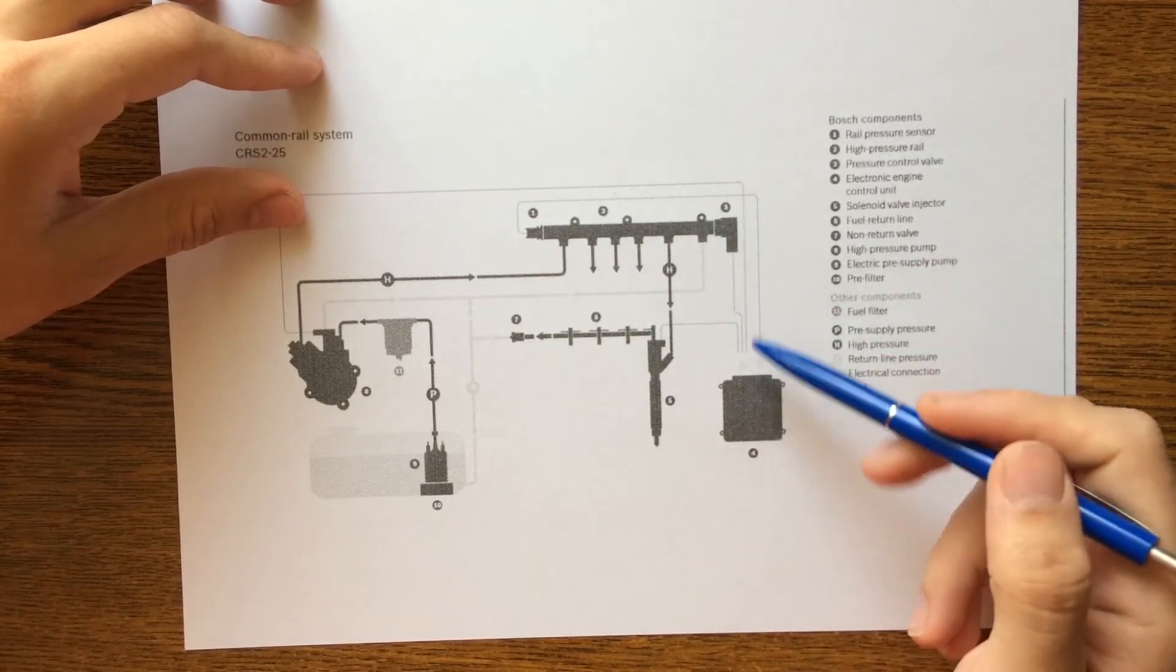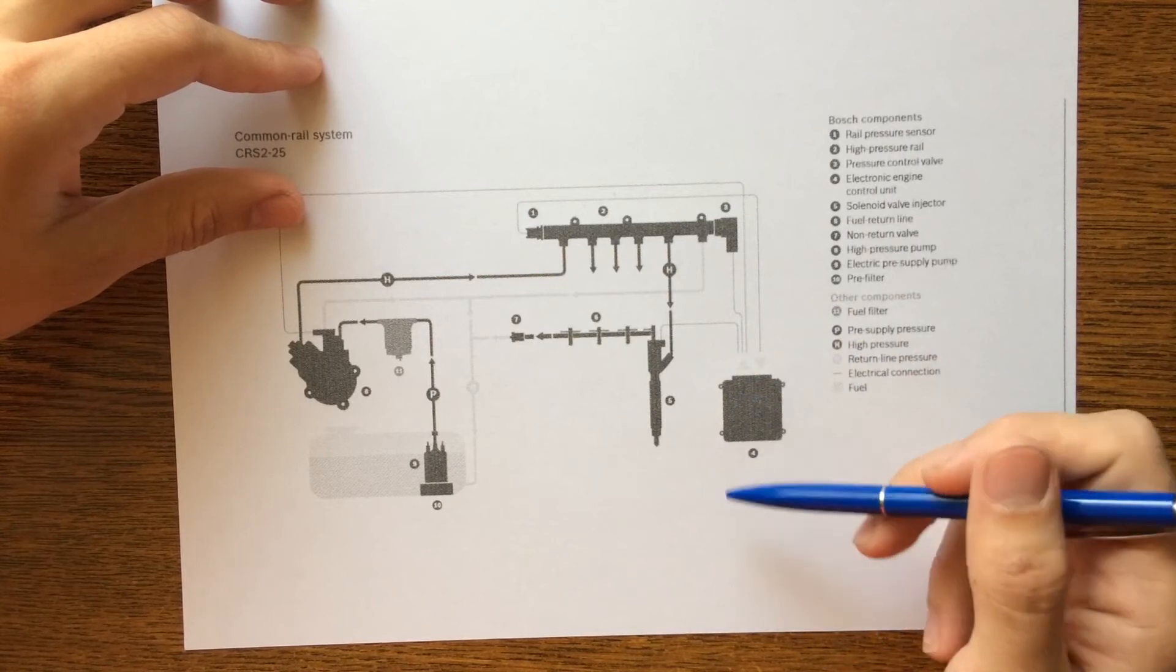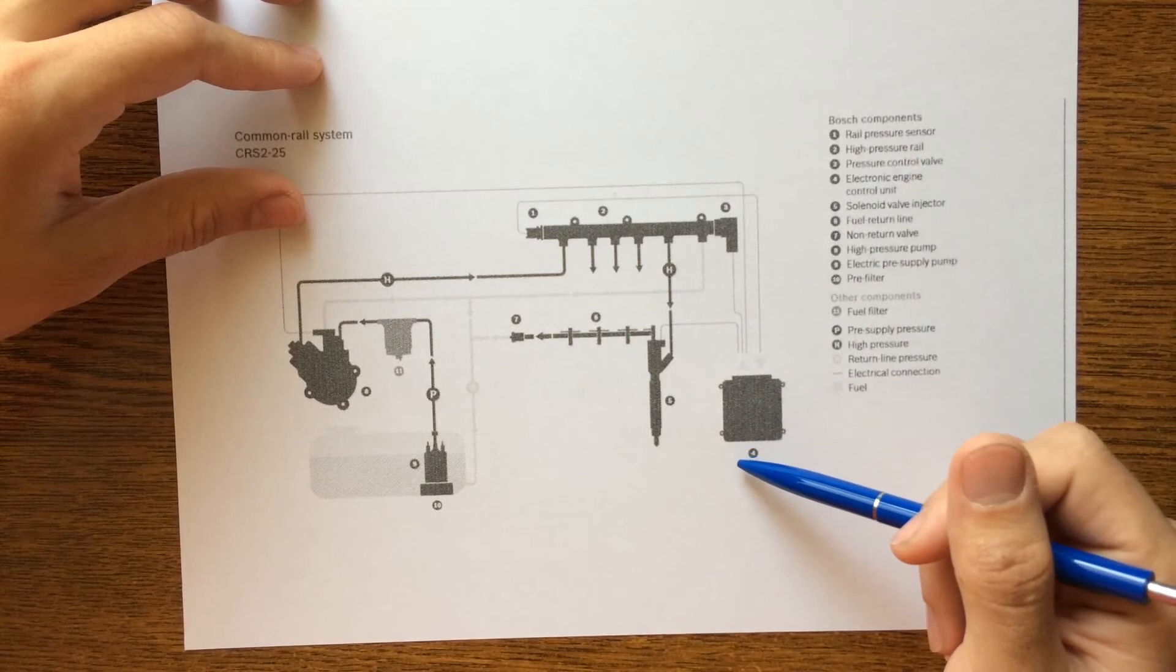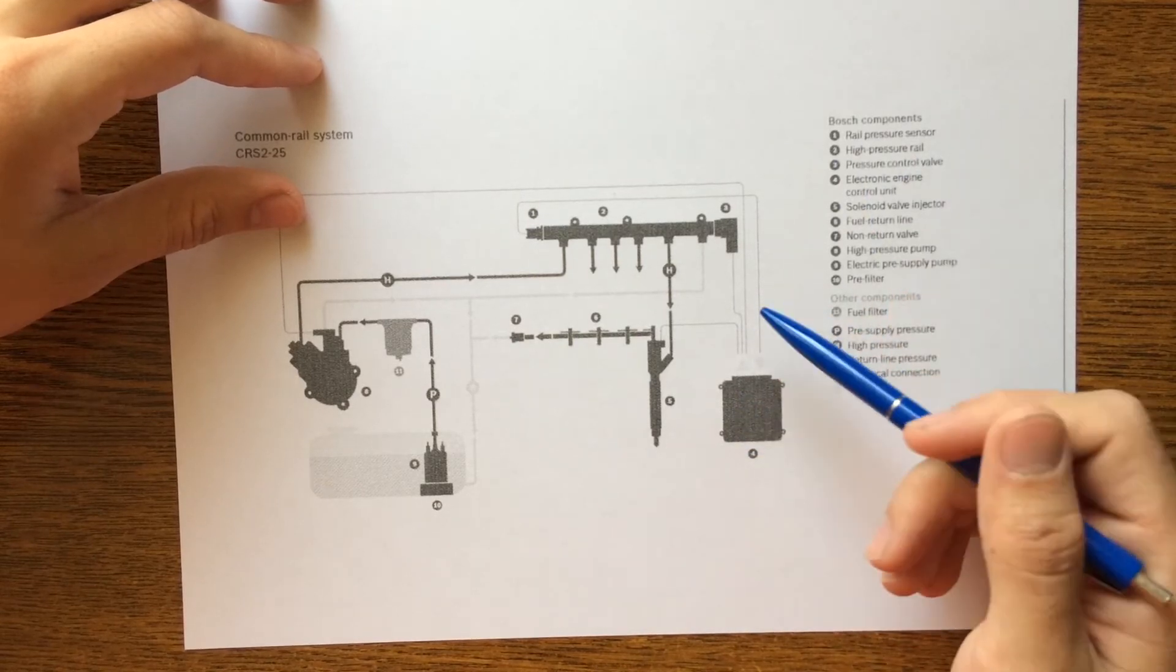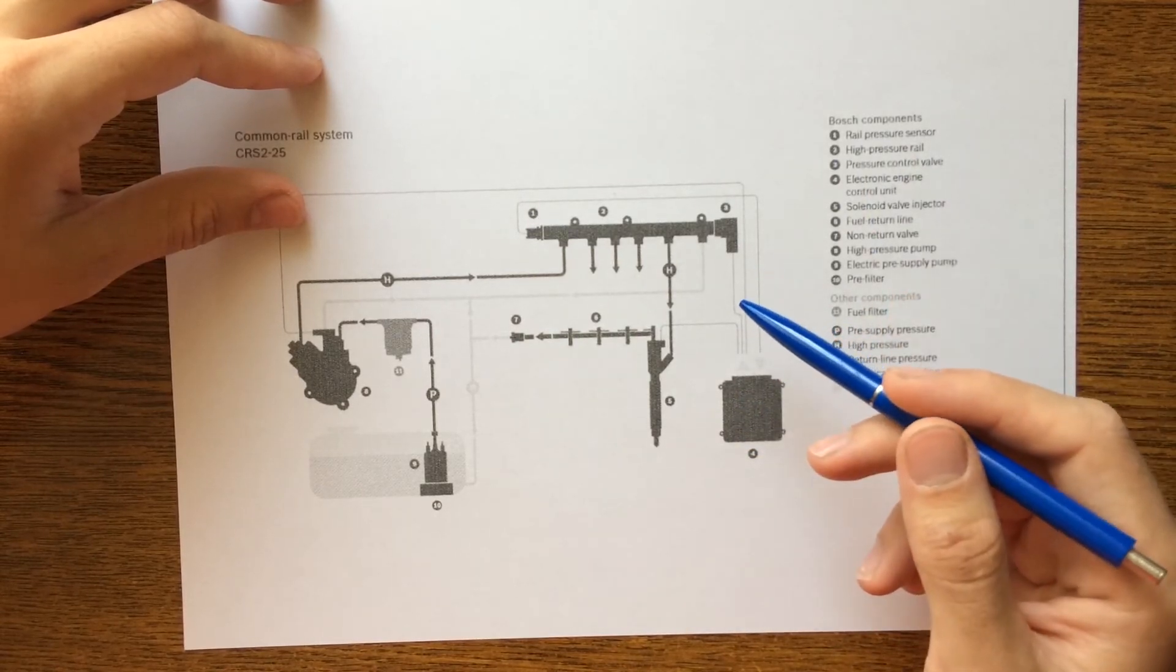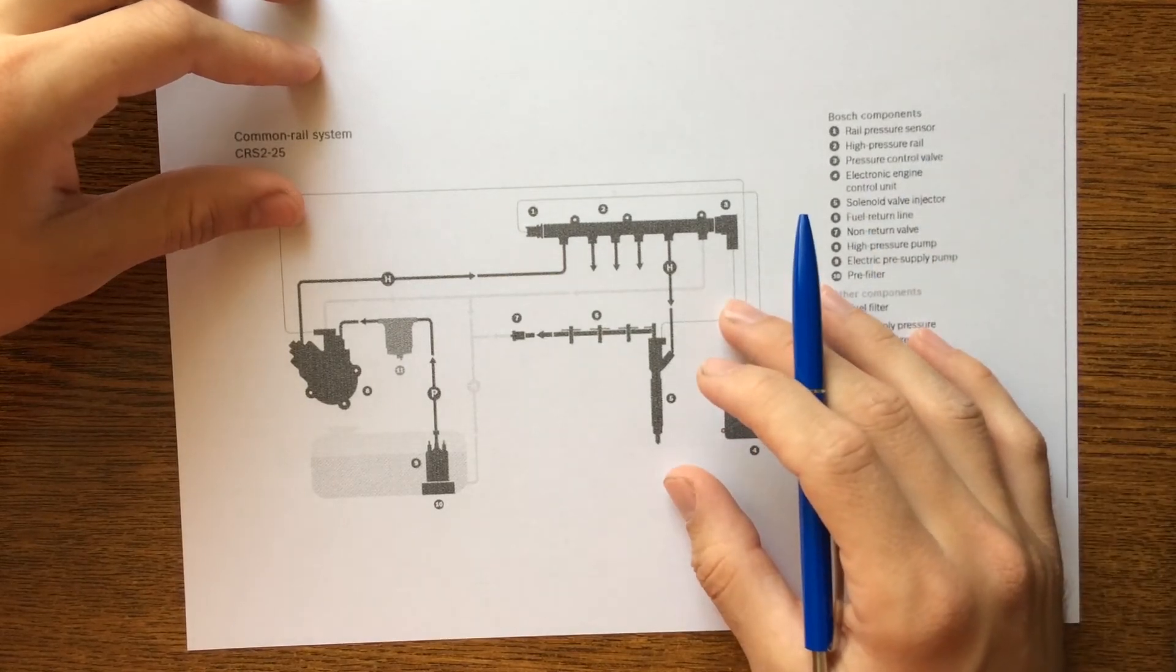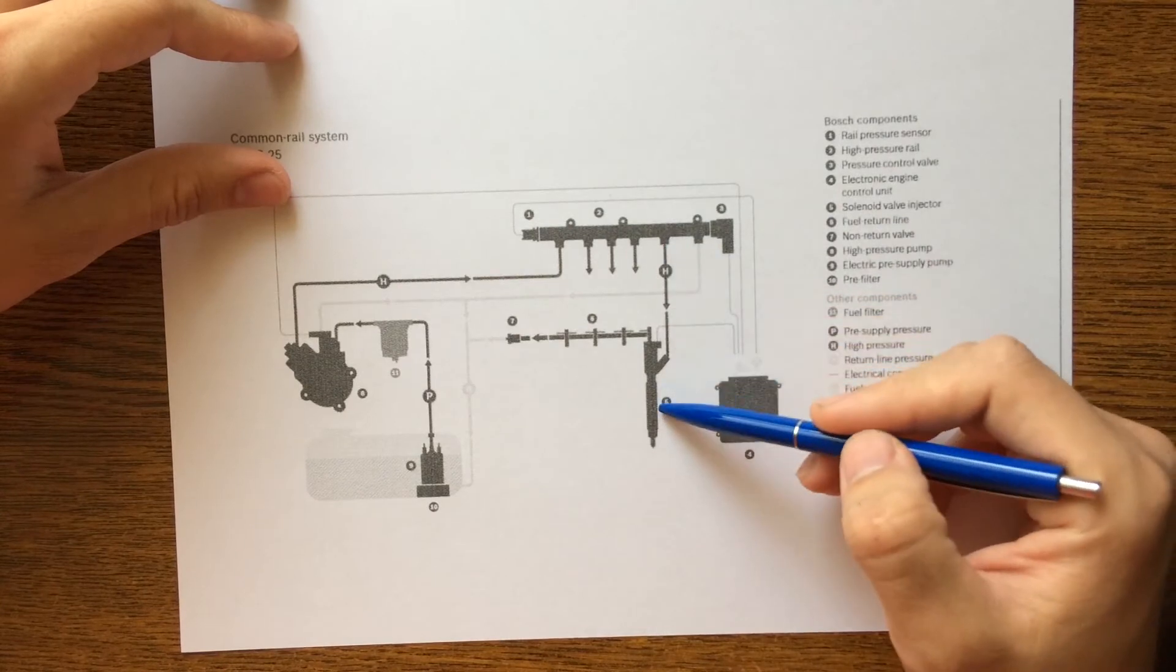The high pressure rail communicates with the control unit via the attached rail pressure sensor. Its measured values are used by the pressure control valve to regulate system pressure.